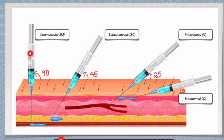For intramuscular injections, the needle tip should be in the muscle, and for that we have to place the needle at a 90-degree angle. For subcutaneous injections, in order to reach the subcutaneous tissue, we place the needle at a 45-degree angle. For fat patients, we can use even 90 degrees for subcutaneous injections.